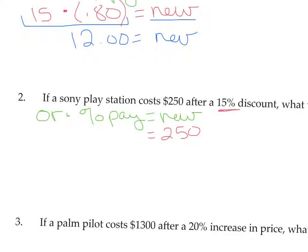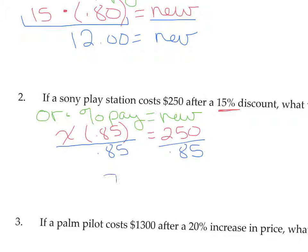The discount is 15%, but that's not what we're paying. After they take 15% off, we're paying 85%. So the original price is the X — that's what we're looking for. To find X, we have to divide by 0.85. $250 divided by 0.85 gives us the original price. Rounded to the nearest cent, it comes out to $294.12.